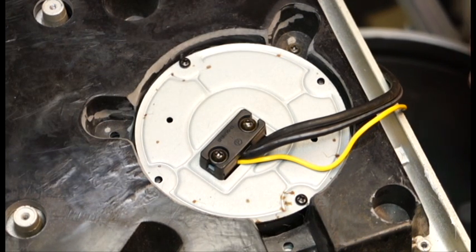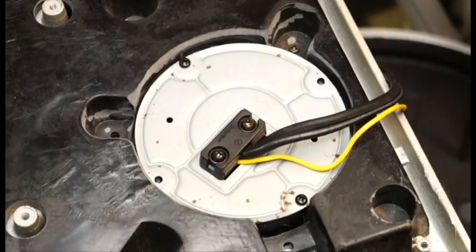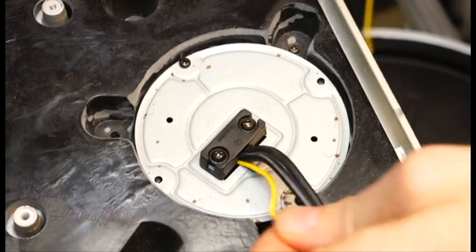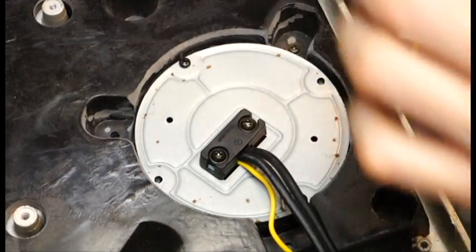We've already taken the back off of this Technics turntable, and as you can see, this is the bottom of where the tonearm attaches. Someone's already been in this table - obviously they don't come with yellow cables.